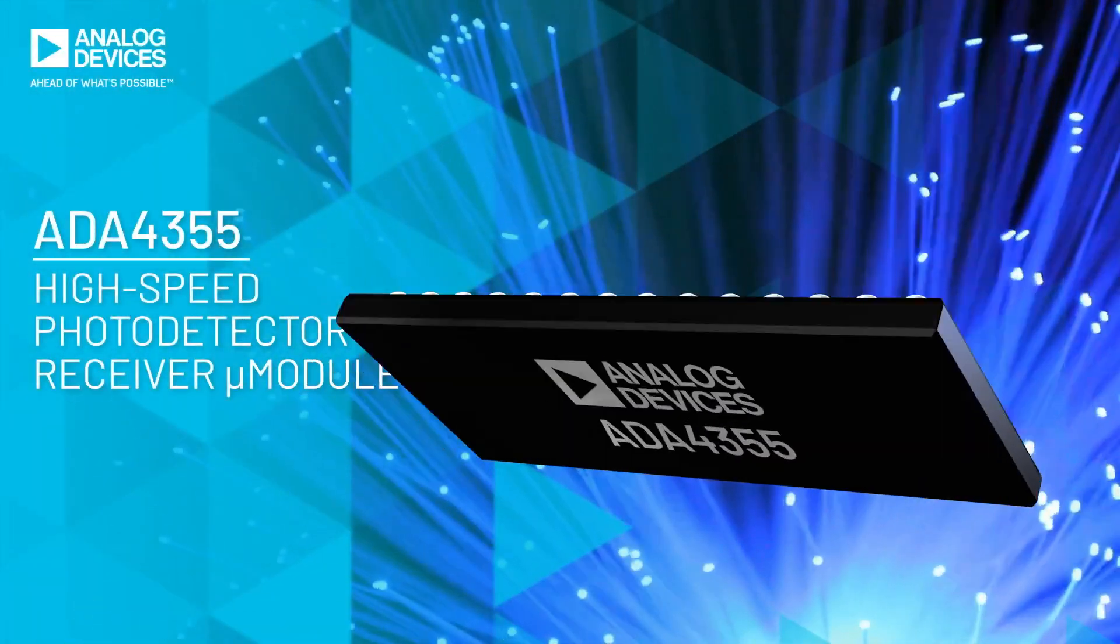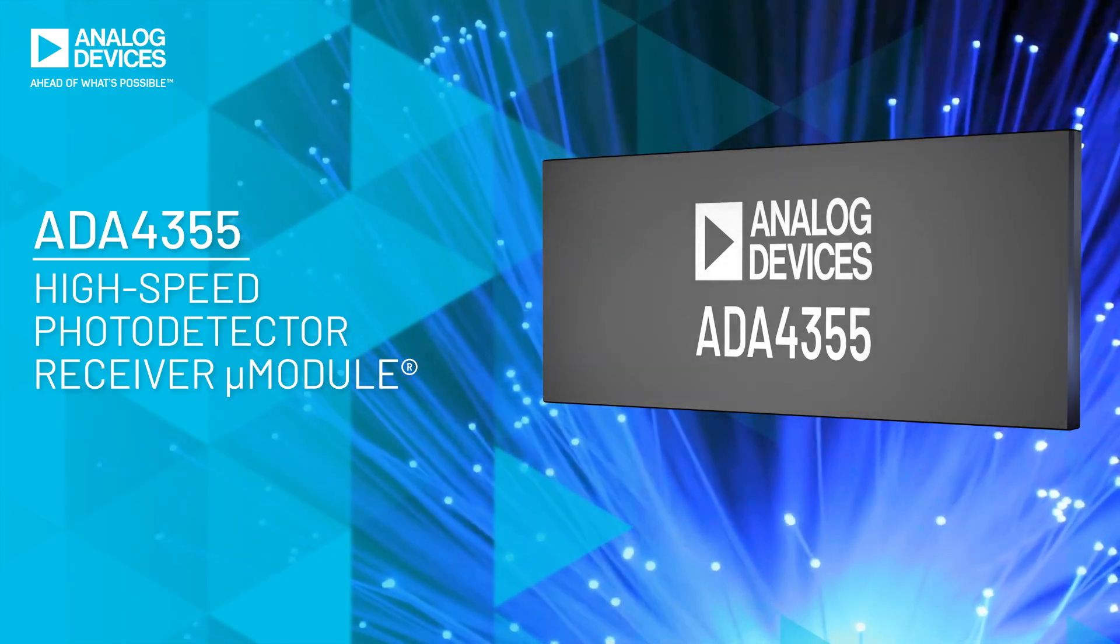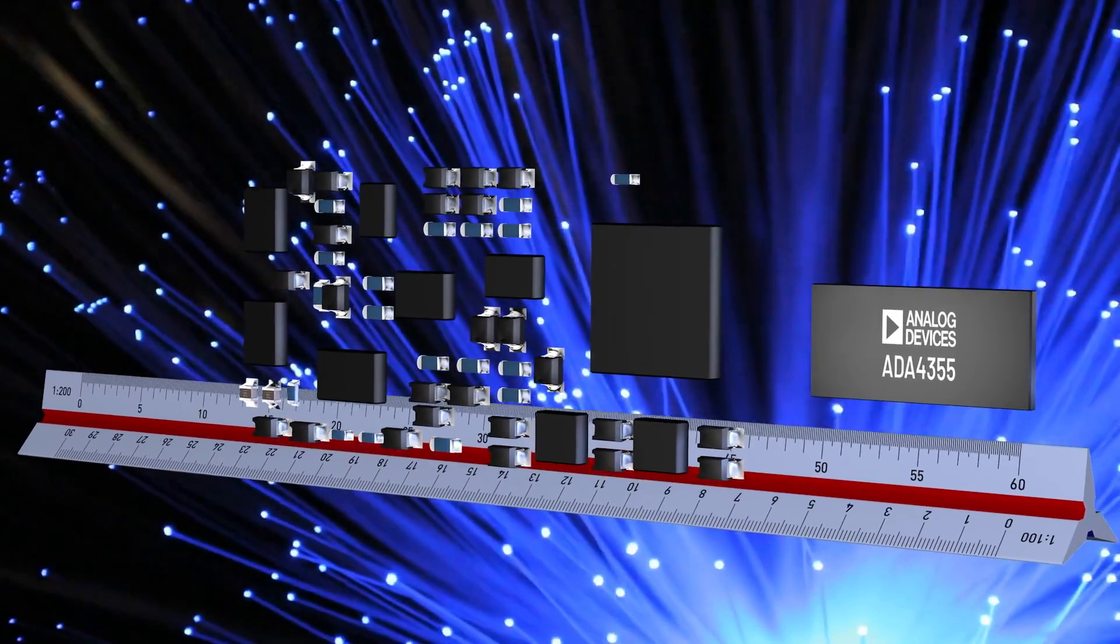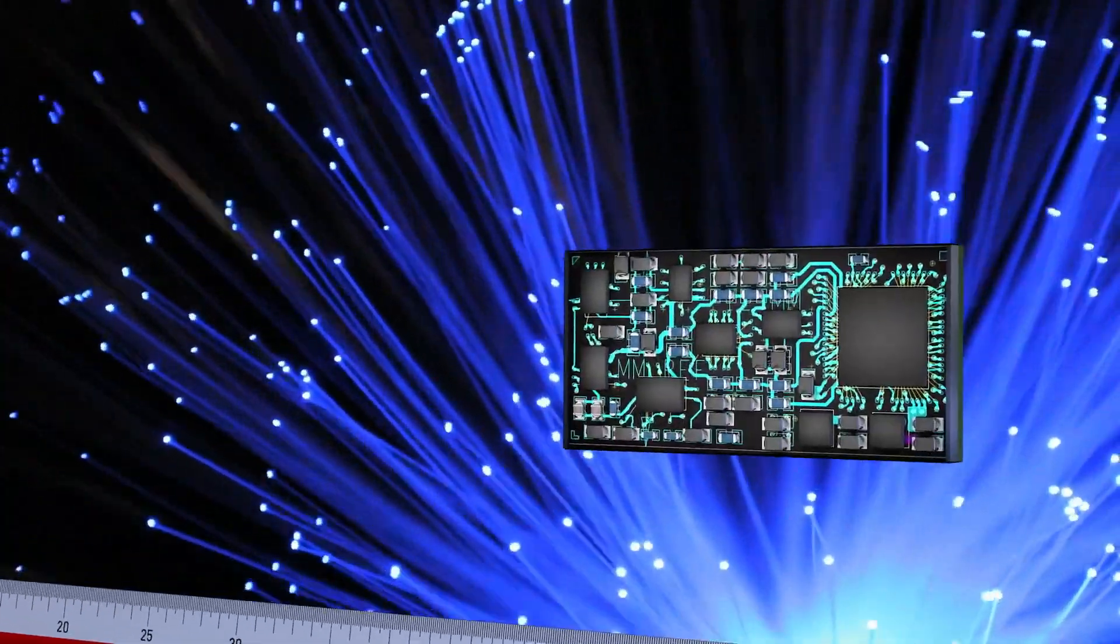The ADA 4355 provides instrument-level performance for measuring high-speed and low-level currents in the industry's smallest form factor, with a 75% space savings compared to discrete implementations.